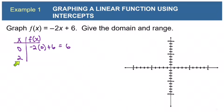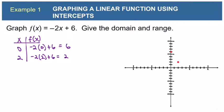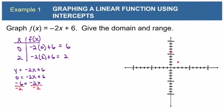Let's also plug in 2: negative 2 times 2 is negative 4, and negative 4 plus 6 is positive 2. So our second ordered pair is (2, 2). Now let's plot (0, 6) and (2, 2). To find the x-intercept, plug in 0 for y. Subtracting 6 from both sides and dividing both sides by negative 2 gives x equals 3. So the line crosses the x-axis at 3.